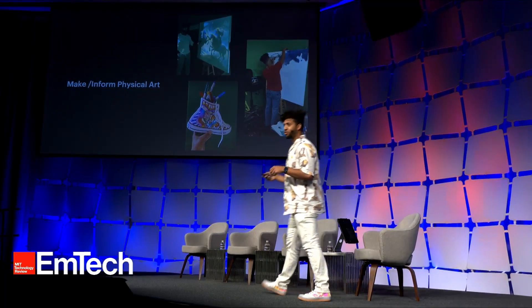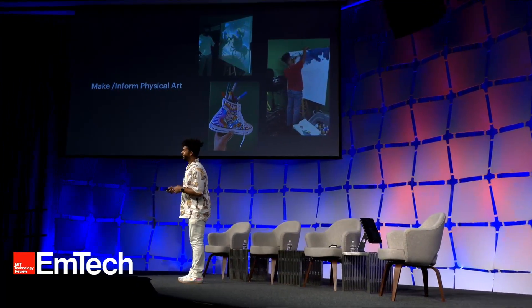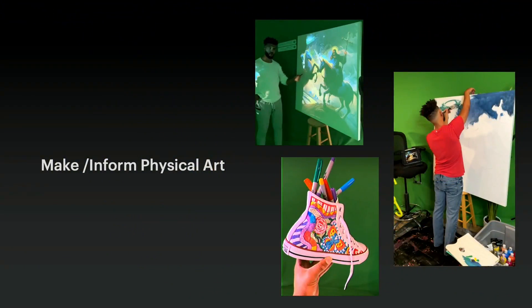I'll give you some more specific use cases. One of the first ones is just making and informing physical art. I got a little worried at first with some of the digital creations — thinking, okay, what am I going to do if I'm all into art? Well, making physical art is still kind of hard to do for robots. So what I've been doing is making images in DALL-E 2, projecting them onto a physical canvas, and then painting over that canvas with my own hands using acrylic paints on materials.